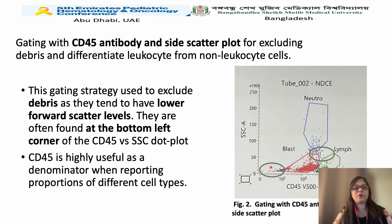This plot shows CD45 versus side scatter. The CD45 antibody is useful for excluding debris and differentiating different types of leukocytes, which are grouped into granulocytes, monocytes, and lymphocytes. Green dots indicate lymphocytes, red dots indicate the blast window, and there are separate areas for monocytes and neutrophils. The lower left area represents debris, which includes large stars, platelets, and other particles.